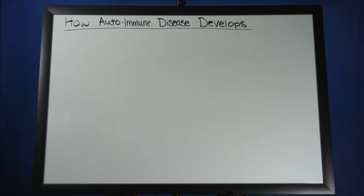So today we're going to be talking about how autoimmune disease develops and how we can stop the progression of autoimmune disease and start reversing some of those antibodies that are produced that start attacking the different tissues of the body.